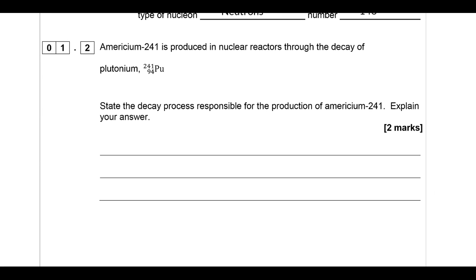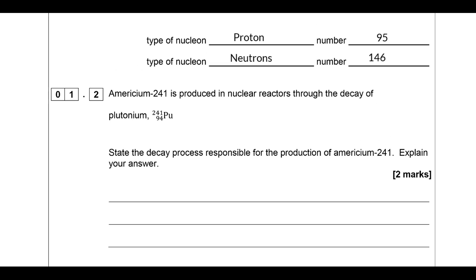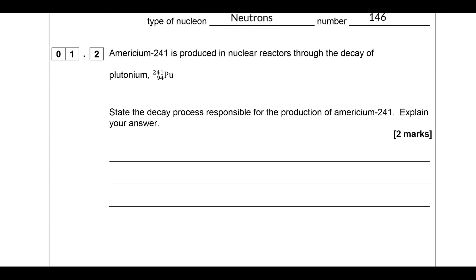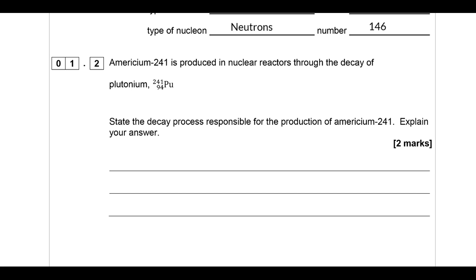Americium-241 is produced in nuclear reactors through the decay of plutonium-241, which has a proton number of 94. We can see that the proton number increases by one, but the nucleon number stays the same. To state the decay process responsible for the production of americium-241: if the nucleon number stays the same as the proton number changes, that indicates some sort of beta decay. If the proton number increases, that tells you it's beta minus decay, because a neutron has turned into a proton.